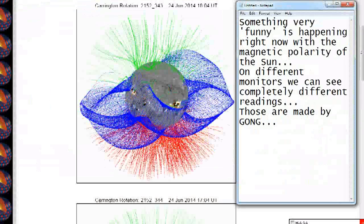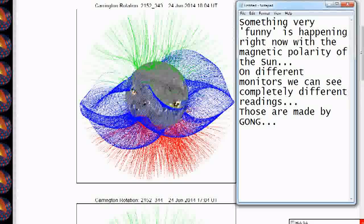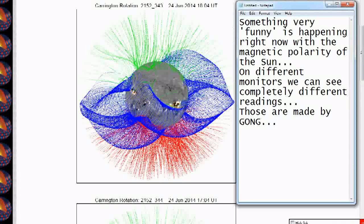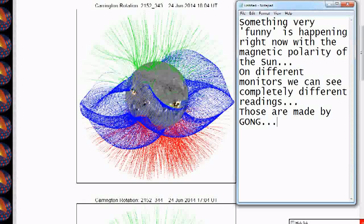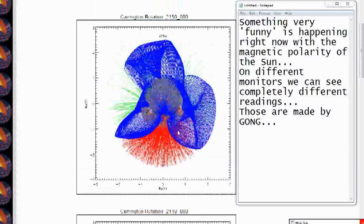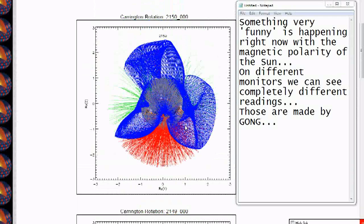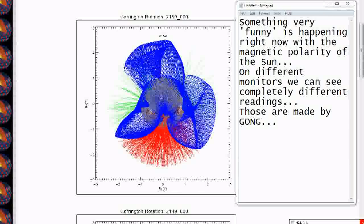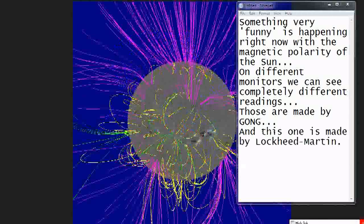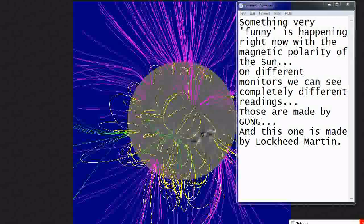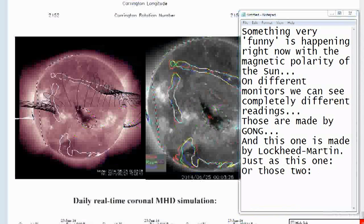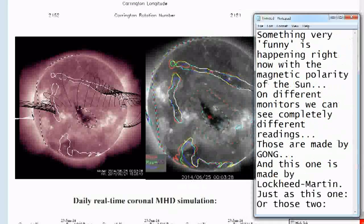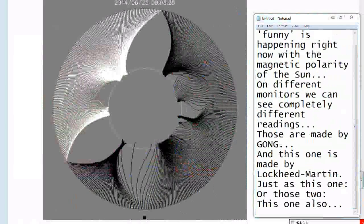Something very funny is happening right now with the magnetic polarity of the sun. On different monitors we can see completely different readings. Those are made by Gong. And this one is made by Lockheed Martin. Just as this one. Or those two. This one also.